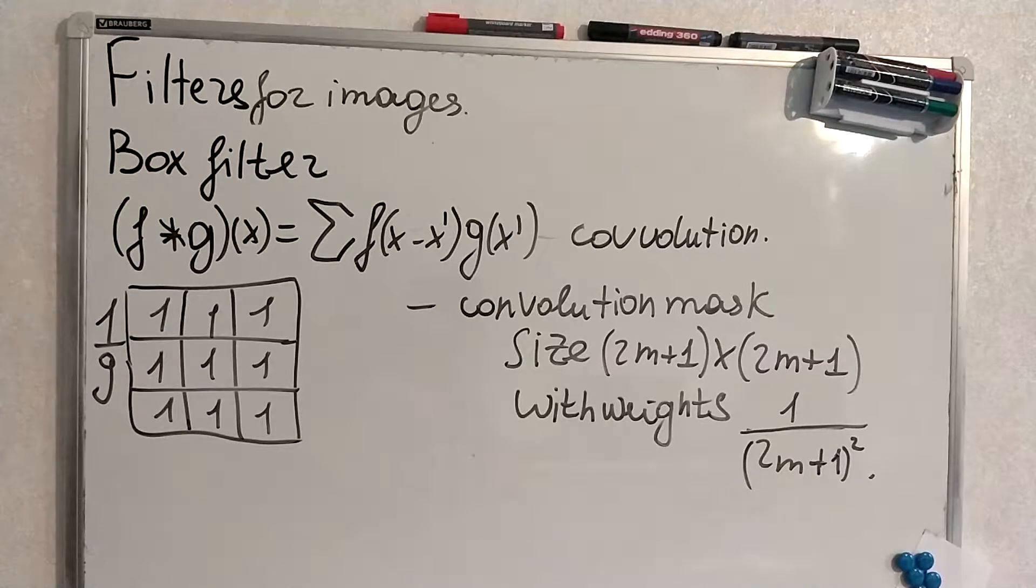Linear-shift-invariant filters can be thought of as convolving with a mask. For example, box filter is the same as convolving with a mask by some size we determine by M from this formula.